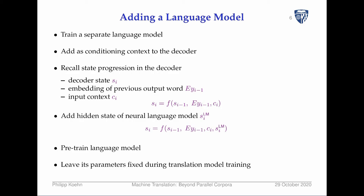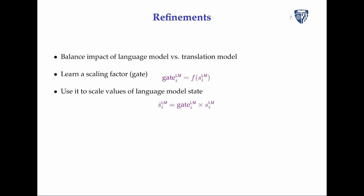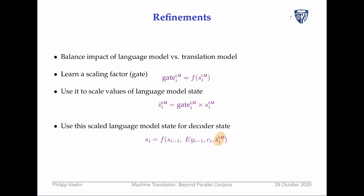You can pre-train a language model and then leave its parameters fixed during translation model training. There are refinements to this: you want to balance the impact of the language model versus the translation model. We can learn a scaling factor, called a gate in deep learning, that basically says how much we're going to trust the language model. The language model can be certain about the next word in some cases and uncertain in others. We use this to scale how much the language model state contributes to the prediction of the next decoder state.